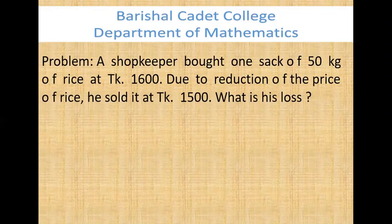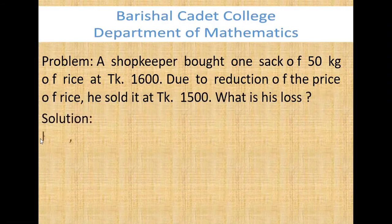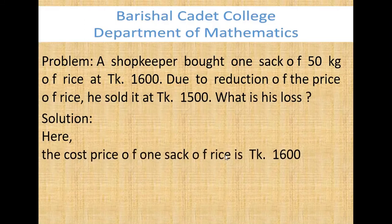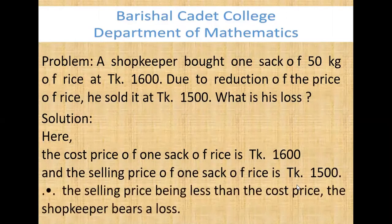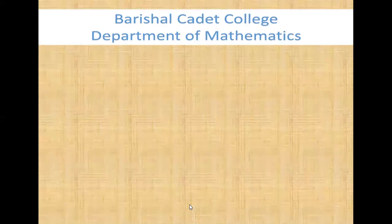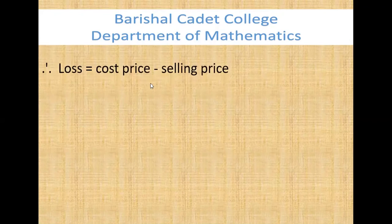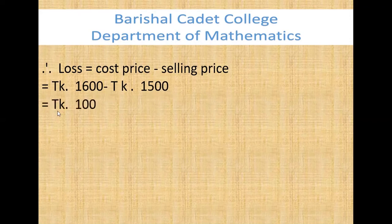Another problem: A shopkeeper bought a sack of 50 kg of rice at taka 1600. Due to a reduction in price, he sold it for taka 1500. What is his loss? The cost price of one sack of rice is taka 1600 and the selling price is taka 1500. Since the selling price is less than the cost price, the shopkeeper bears a loss. Loss = cost price minus selling price = 1600 minus 1500 = taka 100. The required loss is taka 100.